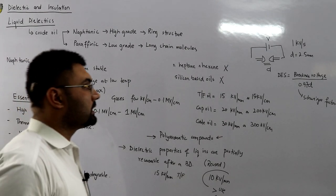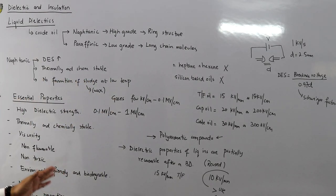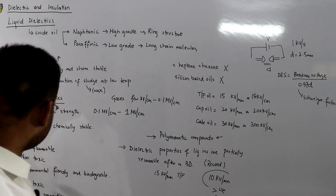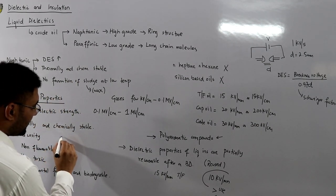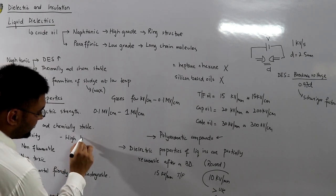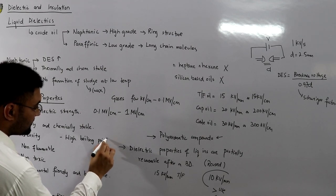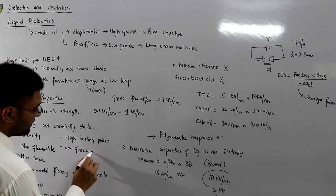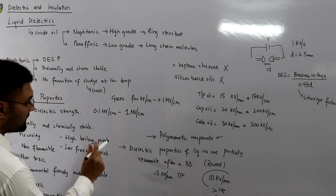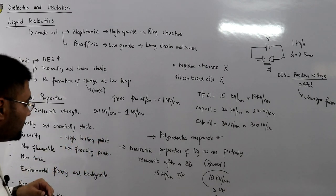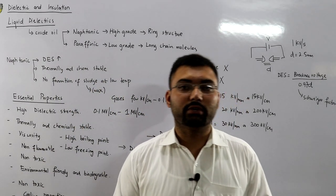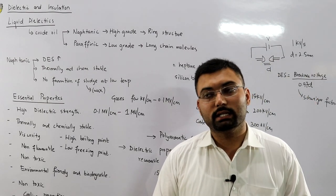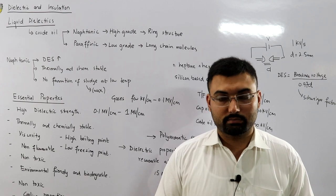To conclude, the essential properties of liquid dielectrics include high dielectric strength, thermal and chemical stability, appropriate viscosity, non-flammability, non-toxicity, environmental friendliness, biodegradability, cooling properties, a high boiling point, and a low freezing point. A high boiling point is needed for use in hot climates like Saudi Arabia, and a low freezing point is needed for cold climates like Russia. That is the introduction to liquid dielectrics. In the next video we will see the breakdown mechanism.